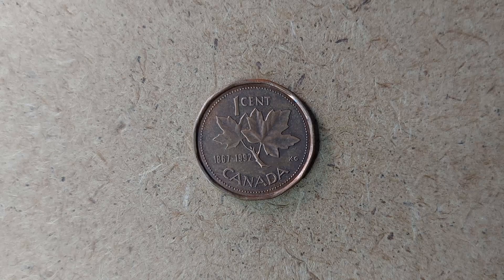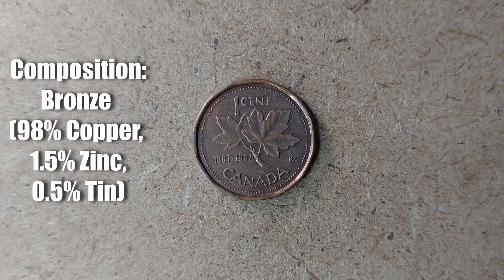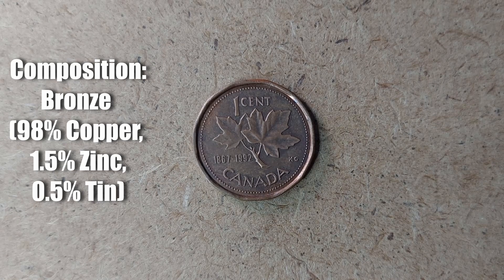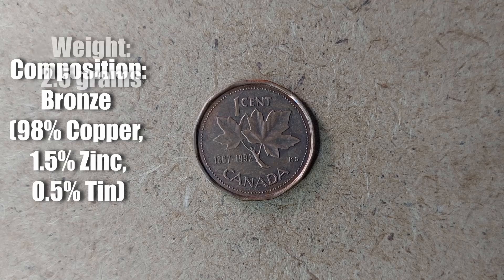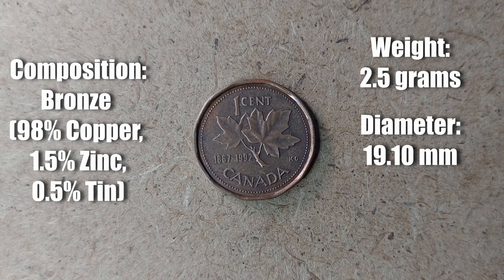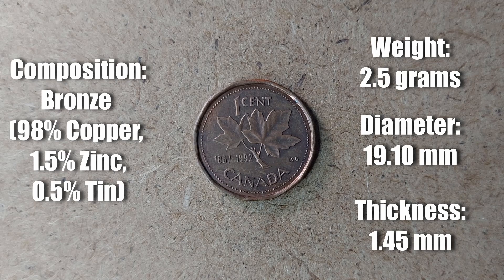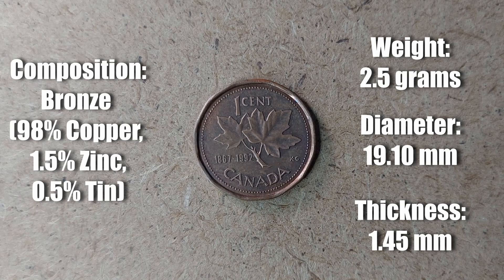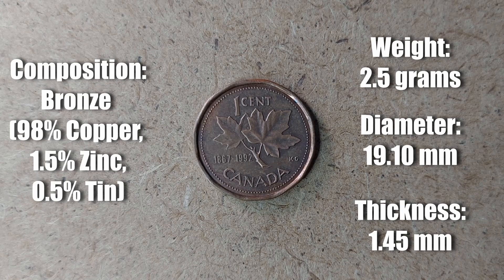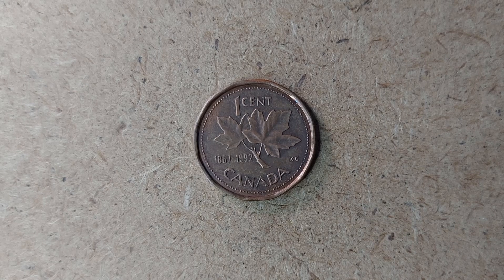Without further ado, let's talk about the statistics of this coin. This is a bronze coin — 98% copper, 1.5% zinc, and 0.5% tin — with a very lightweight of 2.5 grams, a diameter of 19.10 millimeters, and a thickness of 1.45 millimeters. The shape of this coin, as you can see on screen, is a dodecagonal shape, meaning it is 12-sided, and it has an orientation in the medal alignment.